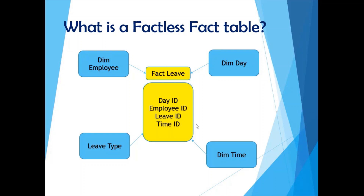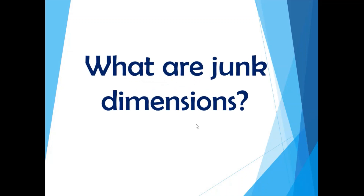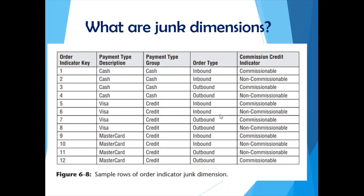Moving on to the next question: what are junk dimensions? Let's look at an example. You have an order indicator key, payment type description, payment type group, order type, and commission credit indicator. You can see some order-related information, some payment-related information, some order type information, and some commission/credit indicator information. These are not exactly related to each other, but they are small descriptive items that could have been created as separate dimensions — a payment type dimension, an order type dimension, a commission type dimension.